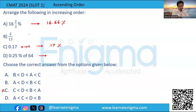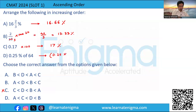Now let's convert options d and b into percentage as well. To convert a fraction into a percentage, we multiply by 100. So for option d: 100 divided by 5 is 20, times 3 gives 40/3, which is 13.33 percentage. For option b: 0.25 percentage of 64 is calculated as 0.25 × 64 — since 0.25 is one fourth of 64 — giving 16 percentage.